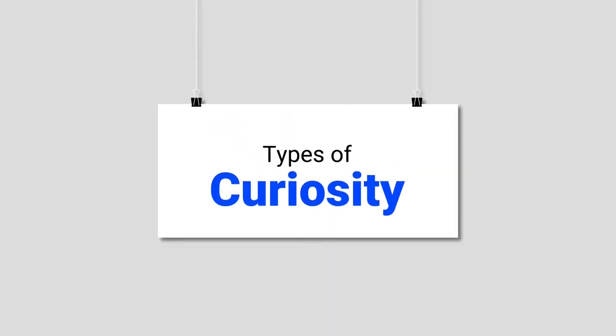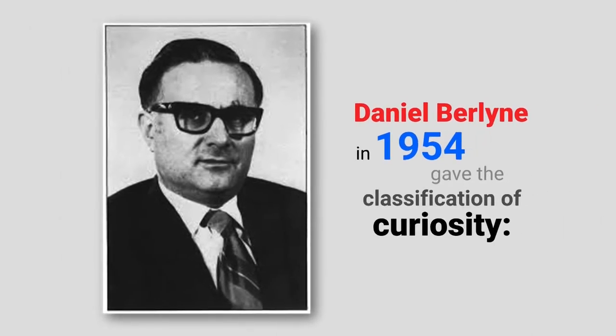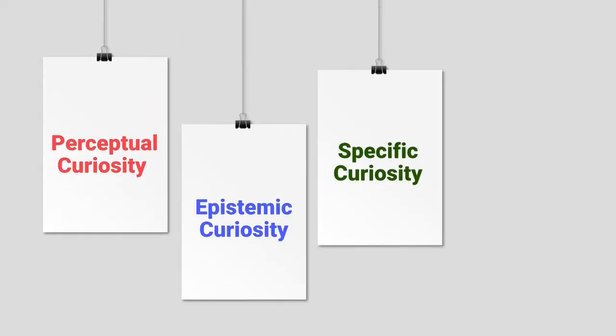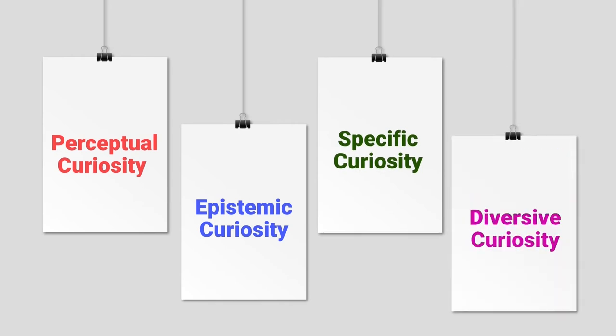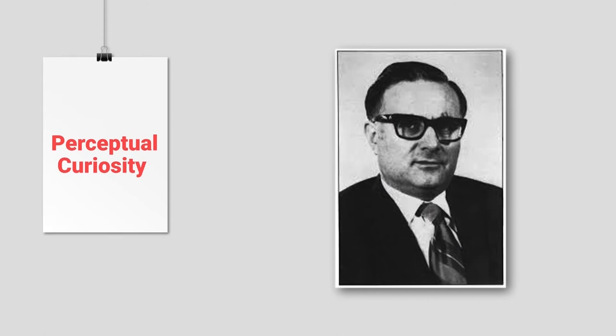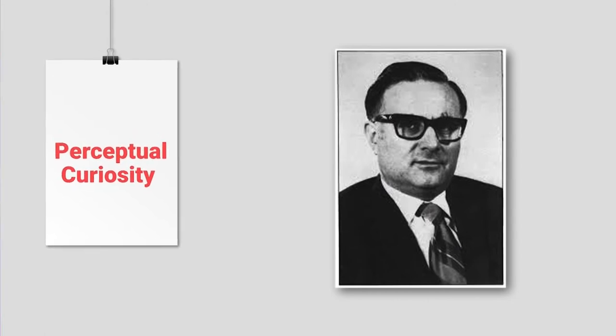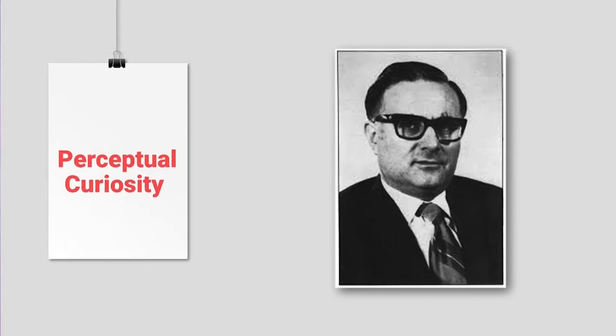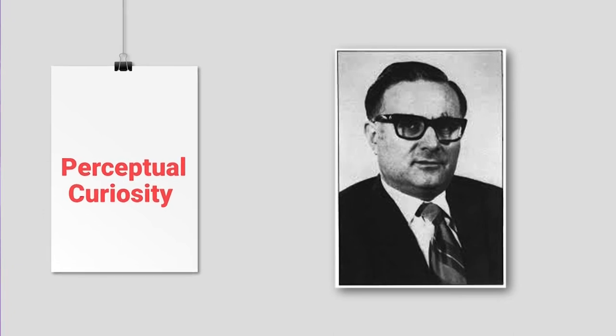There are different types of curiosity. Daniel Berlyne in 1954 gave the classification of curiosity as: perceptual curiosity, epistemic curiosity, specific curiosity, and diversive curiosity. Perceptual curiosity is where we perceive information from the environment just to know about the event — as the name suggests, it is about the perception of an event or any activity.